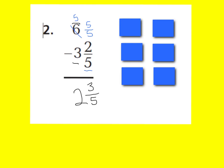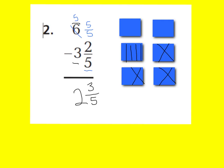Here's why. If I had 6 wholes and I wanted to take away 3 and 2 fifths, I could take away my 3 wholes easily. But then it would be hard to take away 2 fifths from the rest of my wholes. So I would have to break up this 1 whole into fifths — that gives me 5 fifths — and I can take away 2 fifths from that 5 fifths, giving me 2 wholes and 3 fifths.